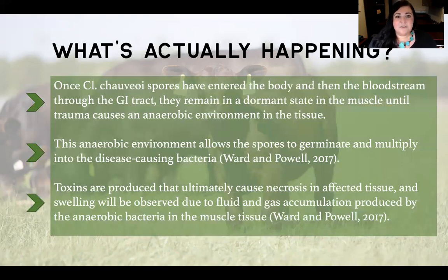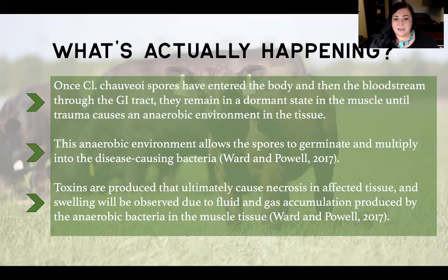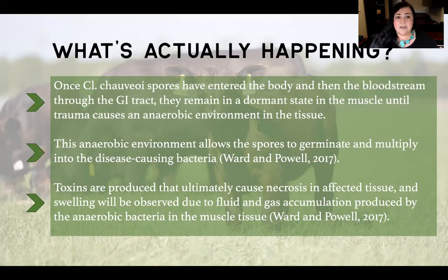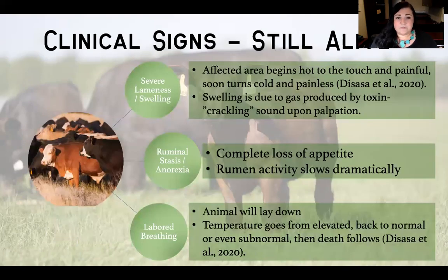So what's actually happening in this animal? Once those Clostridium chauvoei spores have entered the system, gone through the GI tract, entered the bloodstream, and are now in the muscle awaiting an anaerobic environment — once that trauma happens to the muscle, that toxin is produced after these spores have germinated and multiplied. That toxin causes necrosis in the affected tissue. Then you're going to see swelling. Due to the fluid and gas accumulation from this anaerobic bacteria in the muscle, we're going to see all of that muscle necrotize. There's a lot of death to that muscle.